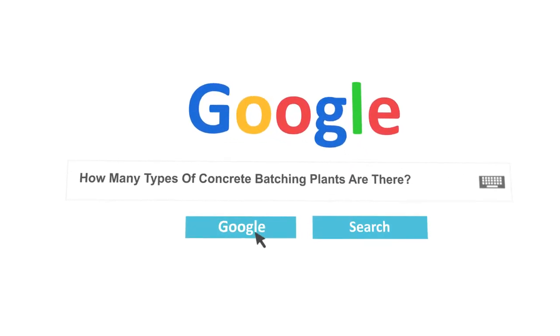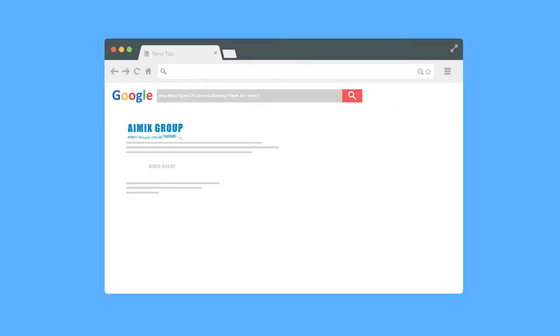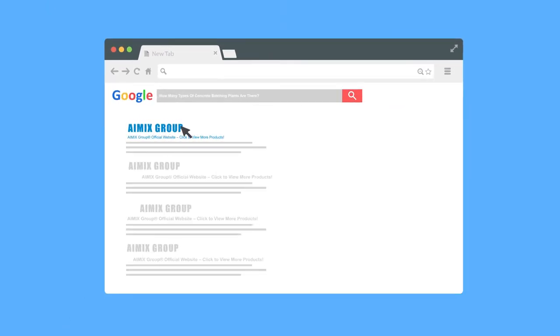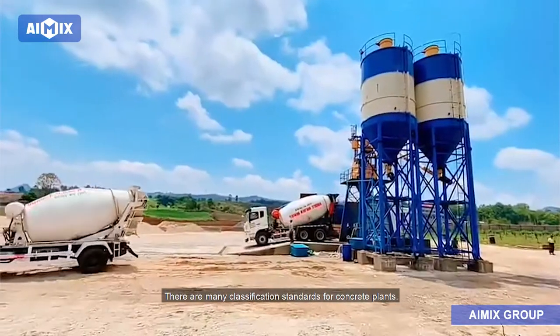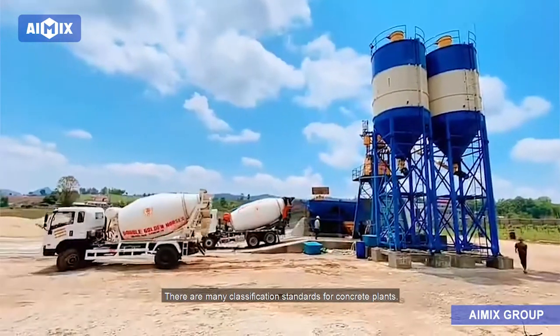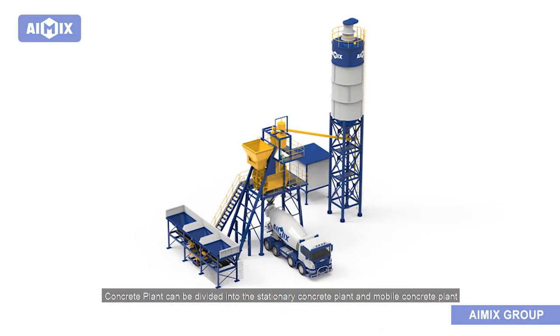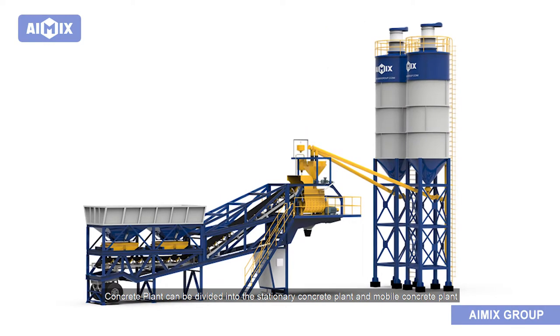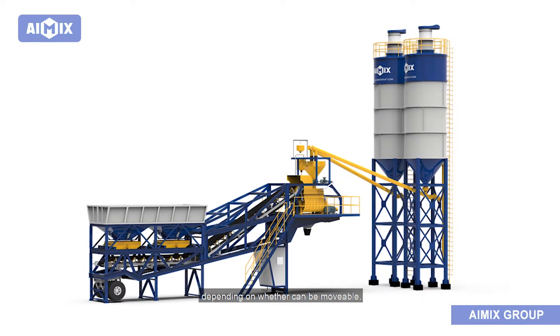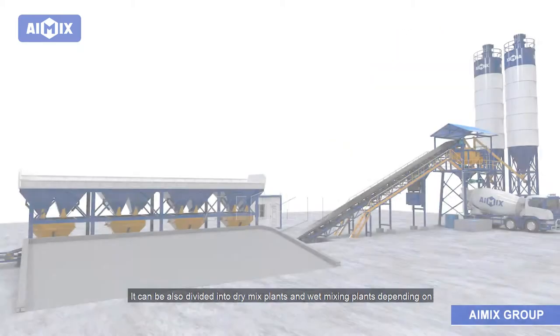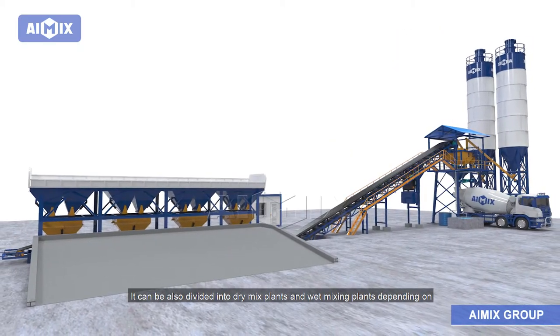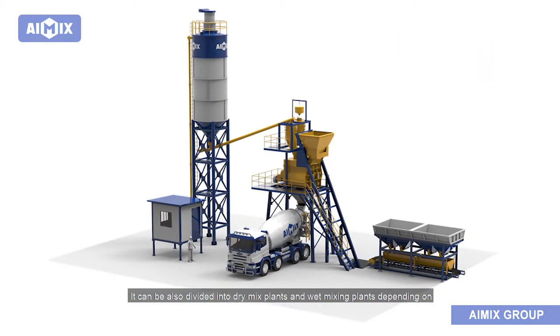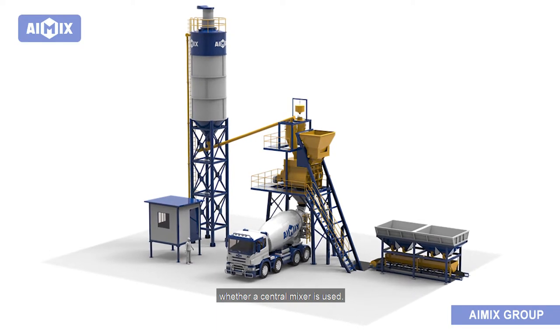How many types of concrete batching plants are there? There are many classification standards for concrete plants. Concrete plants can be divided into stationary concrete plants and mobile concrete plants depending on whether they are movable. They can also be divided into dry mix plants and wet mixing plants depending on whether a central mixer is used.